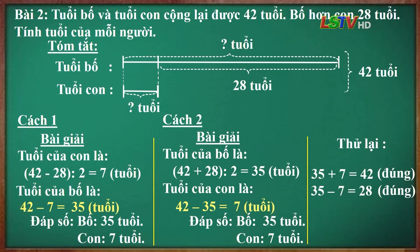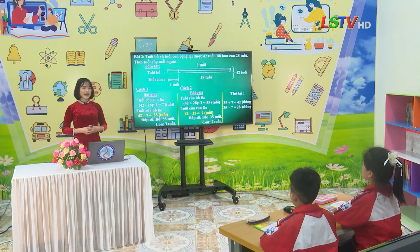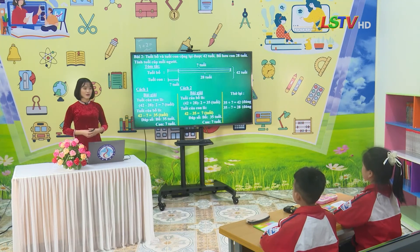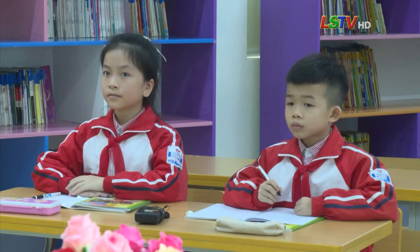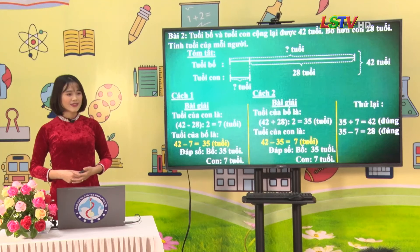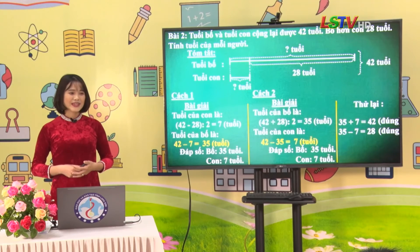Vậy với 2 bài tập trên, các em đã biết rõ tổng và hiệu của 2 số. Khi giải, các em chỉ cần áp dụng công thức để giải. Vậy với bài toán cho biết tổng nhưng chưa cho biết hiệu, các em giải như thế nào? Chúng ta chuyển sang bài tập số 3.